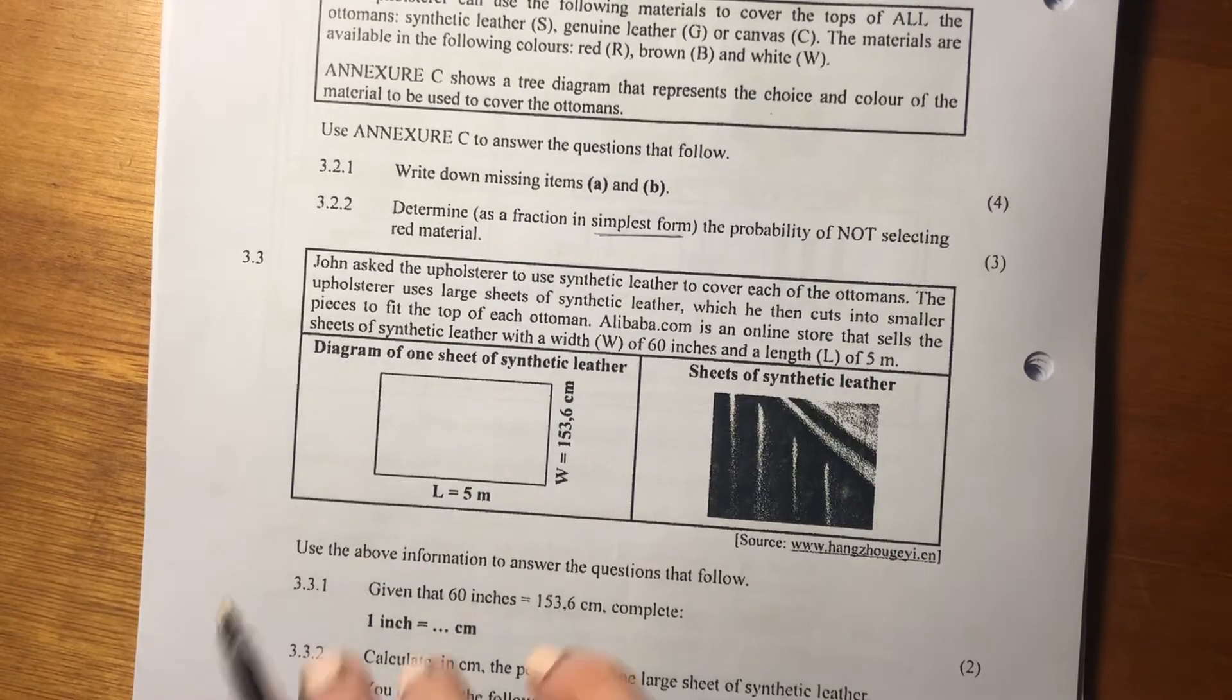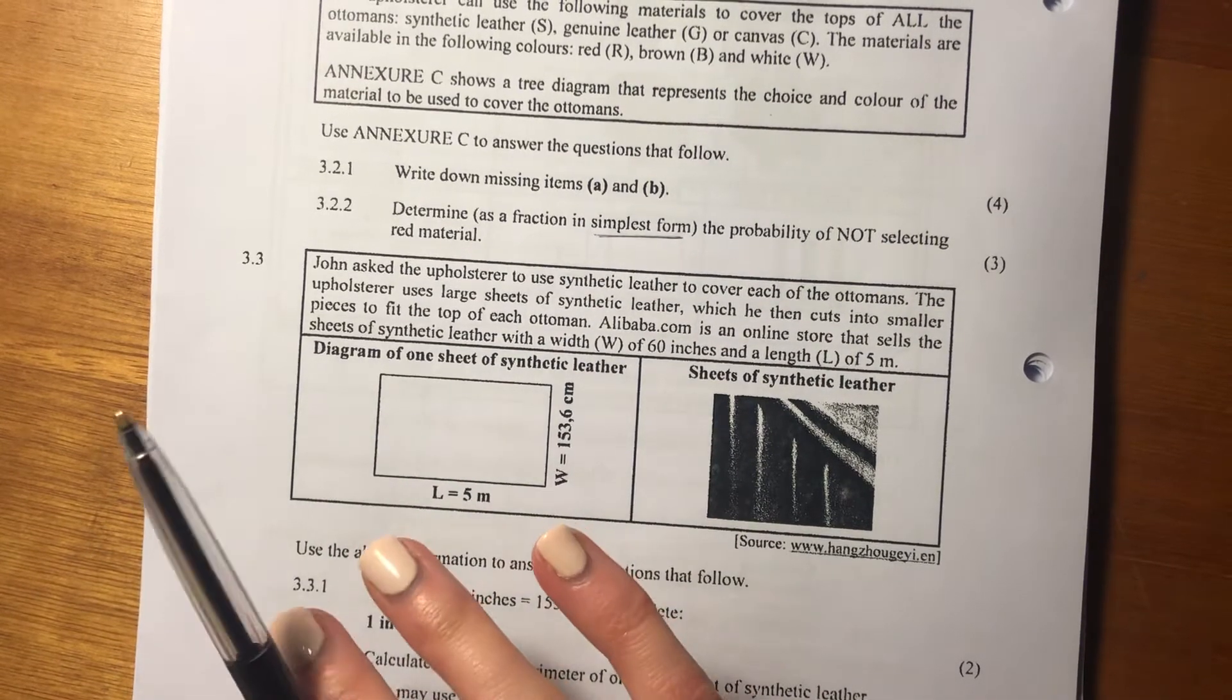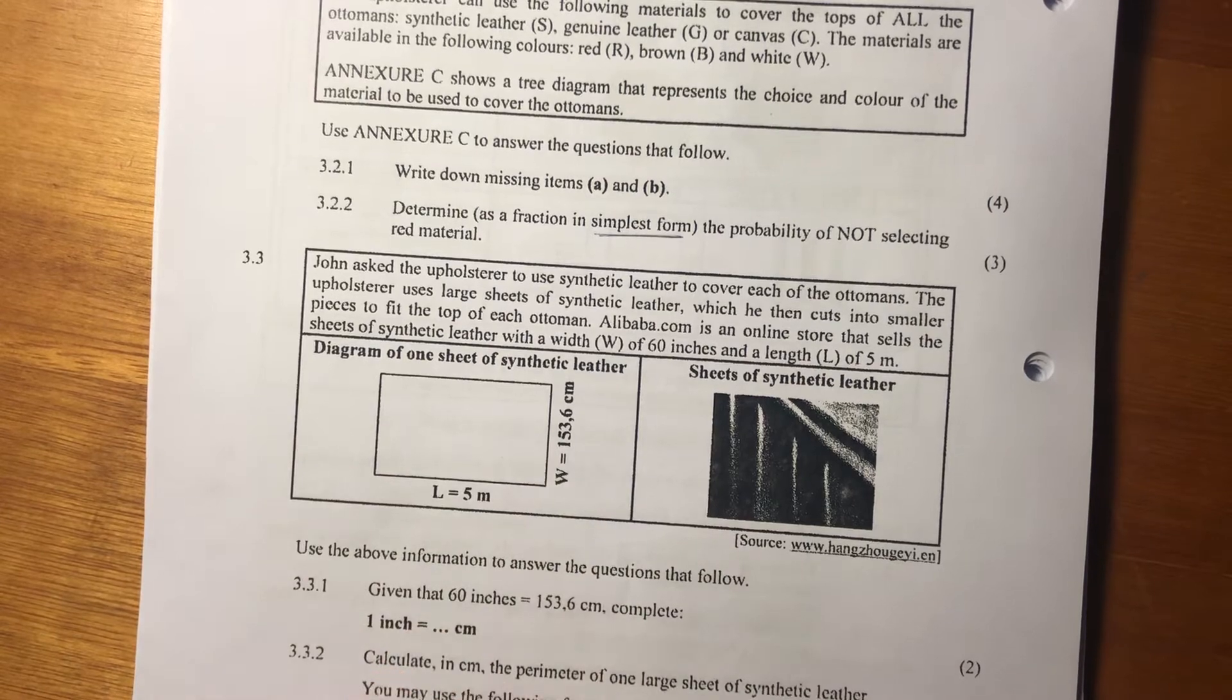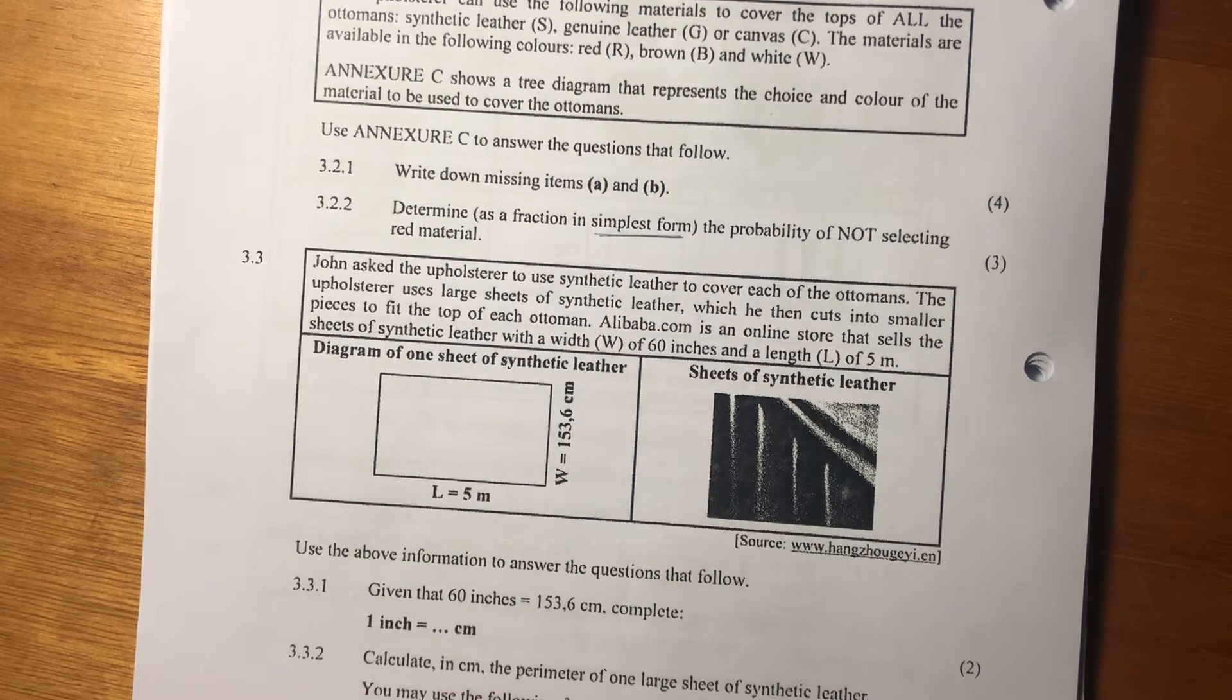Hi guys, let's now go into 3.3. It's still the same scenario with Ottomans and the upholsterer. And let's see what the next question is about.